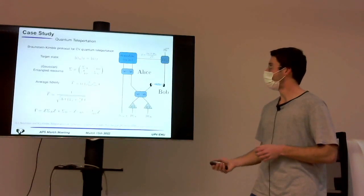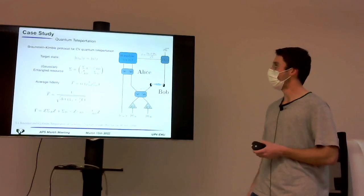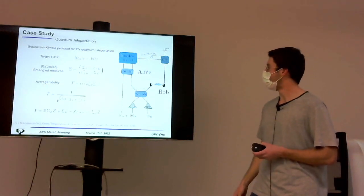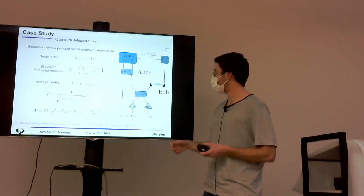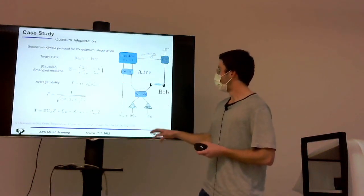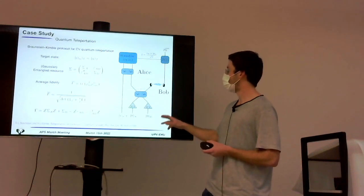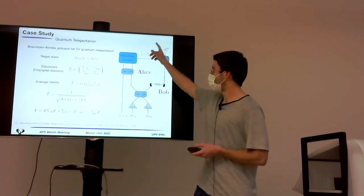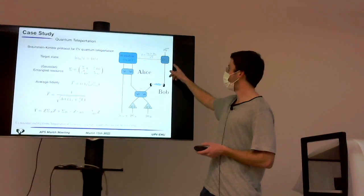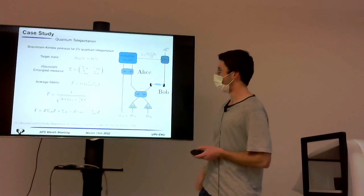And we will test these states in quantum teleportation, which with continuous variable, looks something like this. We assume that Alice has some unknown state. We'll think a coherent state. And what she does is combine it with the mode of the entangled state that she shares with Bob, and perform homodyne measurements. The results of those measurements are communicated classically to Bob,